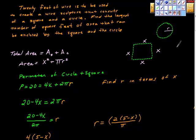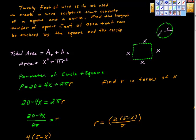Here is an AP Calc AB free response question. The question is: 20 feet of wire is to be used to create a wire sculpture that consists of a square and a circle. Find the largest number of square feet of area that can be enclosed by the square and the circle. So this is a pretty cool question - we have a circle over here and a square over here.